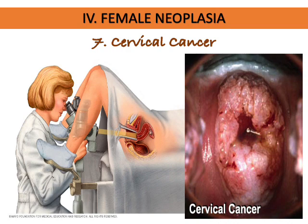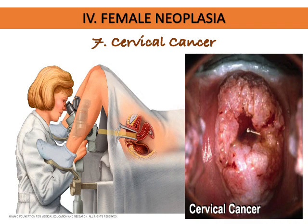Colposcopy is another way to determine cervical cancer through visualization of the cervix, and cervical biopsy can be performed as a definitive diagnosis. Important nursing interventions after the procedure include keeping the perineum clean and dry, changing pads frequently, teaching women to avoid lifting heavy objects, avoiding intercourse for two weeks to prevent bleeding, and reporting any excessive bleeding.